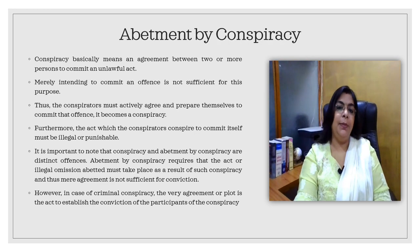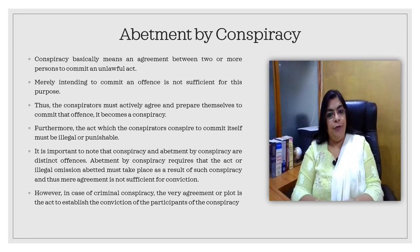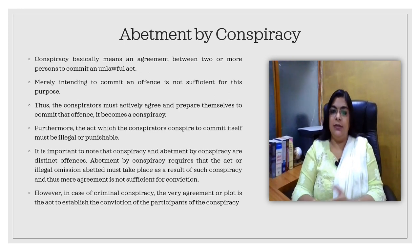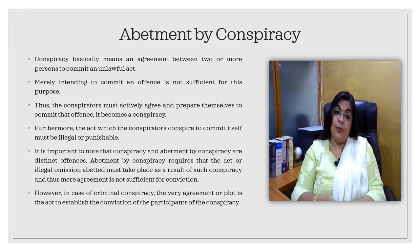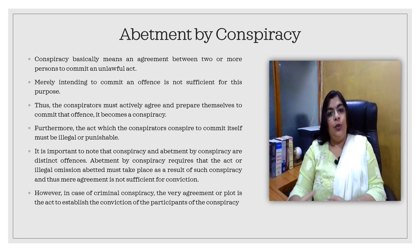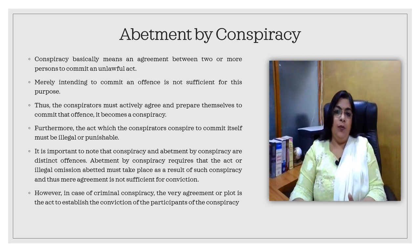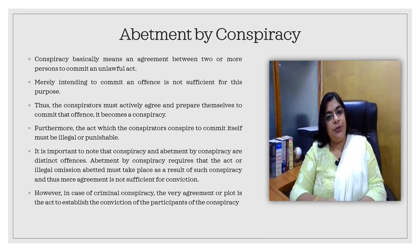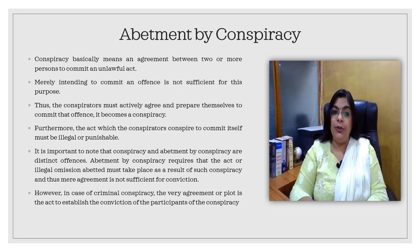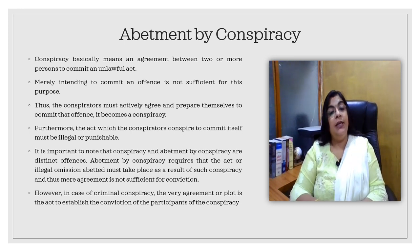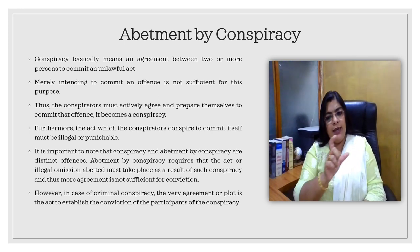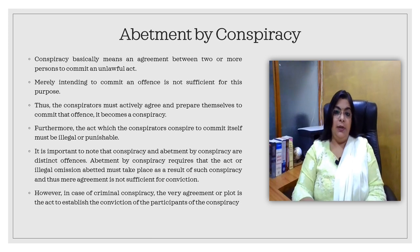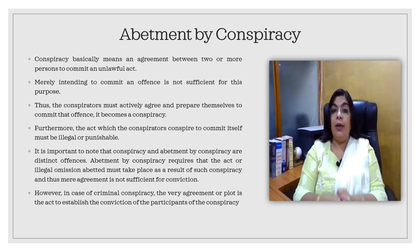Next is abatement by conspiracy. As far as the meaning of conspiracy is concerned, it means there must be an agreement between two persons to conspire or to make a plan to commit anything illegal or unlawful in nature. For that, there must be a conversation, an exchange of thought, and after that an agreement between the two persons to commit any illegal act with proper planning. That is called abatement by conspiracy.